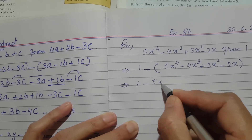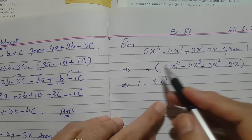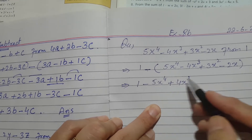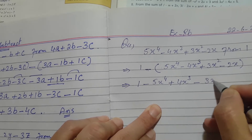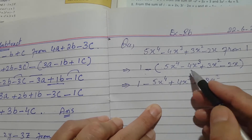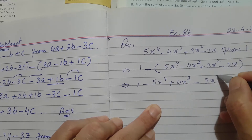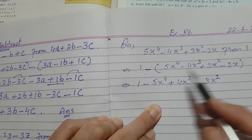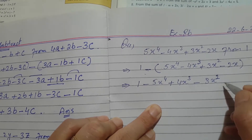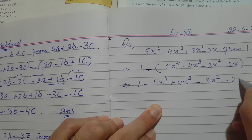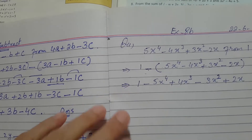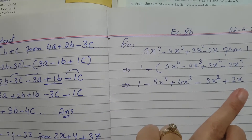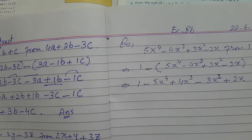In the next step: 1 stays as 1. Minus times minus gives plus, so minus 5x to the power 4 becomes negative. Minus times minus gives plus 4x cube. Minus times plus gives minus 3x square, because opposite signs give minus. Now you have subtracted the whole expression from 1, getting all terms with opposite signs.